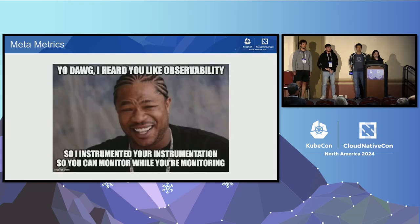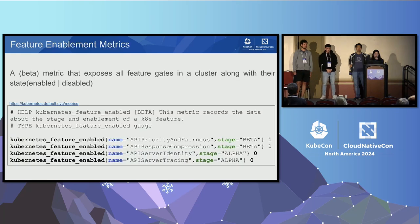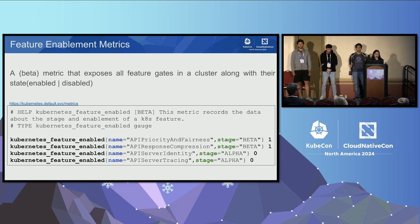We also have meta-metrics — metrics about the metrics that exist in Kubernetes. Things like the total number of metrics that are stable, beta, or alpha, and the total number of metrics that are disabled or hidden. We also have feature-enabled metrics, another handy metric you can use to quickly find out which Kubernetes feature is enabled in your cluster. You can look at this metric to see the name of the feature, its stage, and whether it's enabled or disabled.